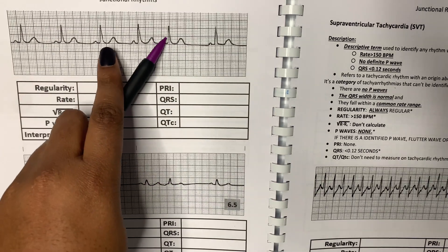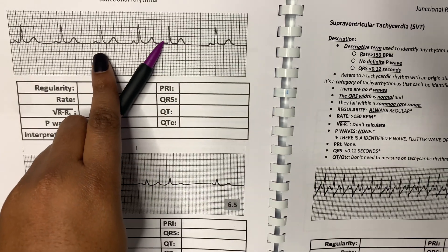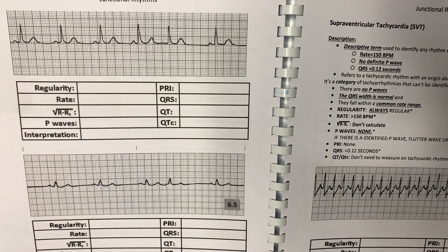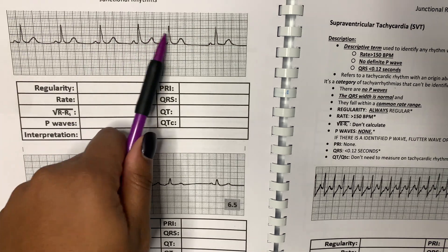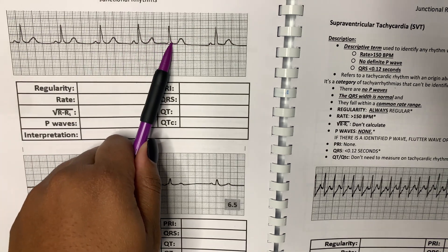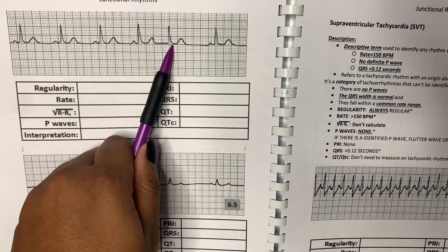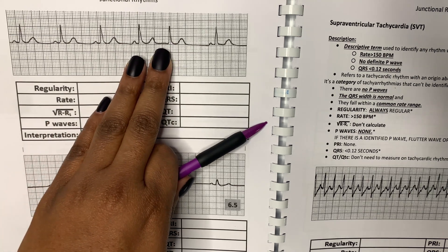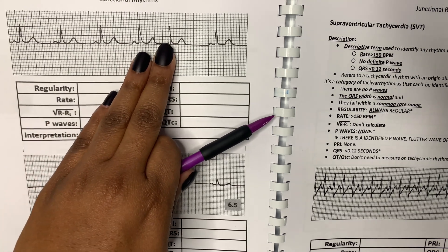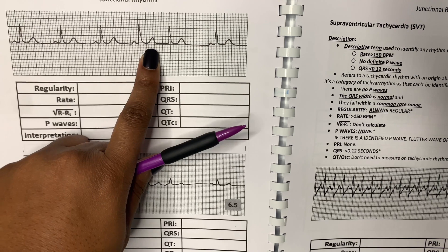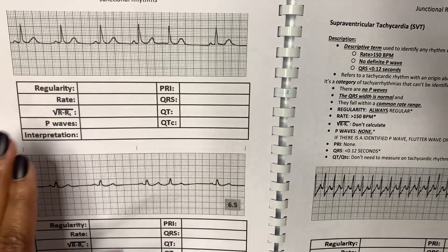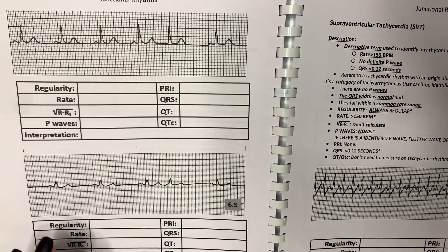If you look here, you can't really see the P wave — it's basically non-existent, but it's probably hiding within the QRS. But regardless, if you can't identify the P wave or if it's inverted upside down, then that's a PJC.